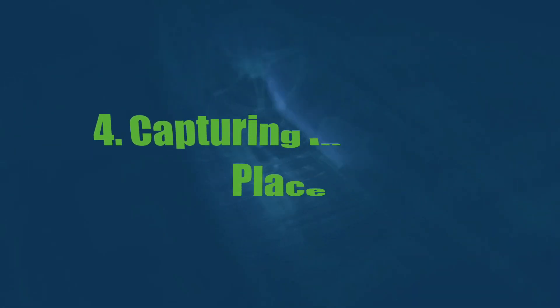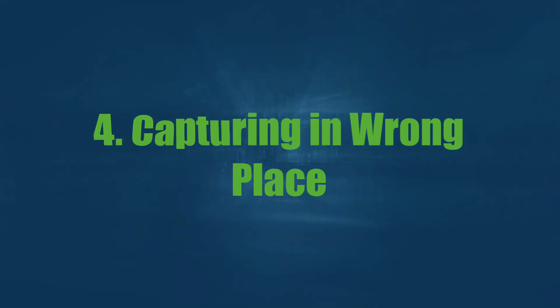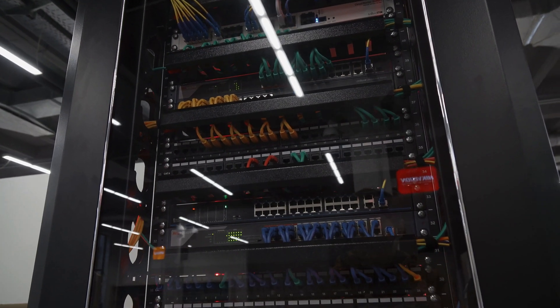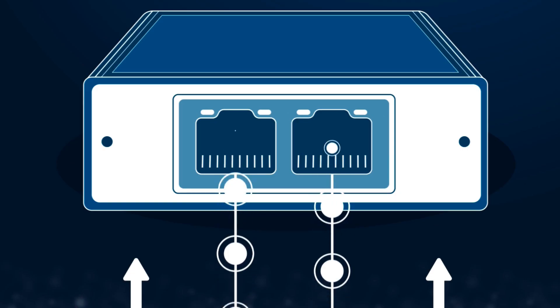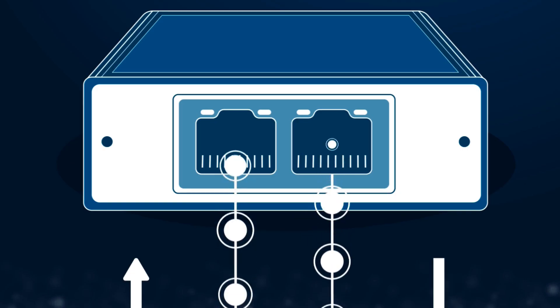The fourth mistake is capturing traffic in the wrong place. We can assume we know where traffic goes — maybe we plug into a switch thinking we have a proper span set up, or we assume we know which server a client is communicating with when in fact it's talking to a different one. In a switched environment, we want to make sure our packet capture device is in the right place, either by using a tap to break the connection along the network path, or using a span to route the appropriate traffic to our monitor port.